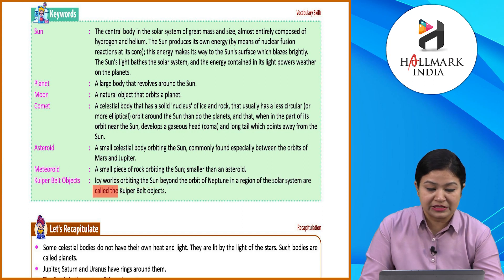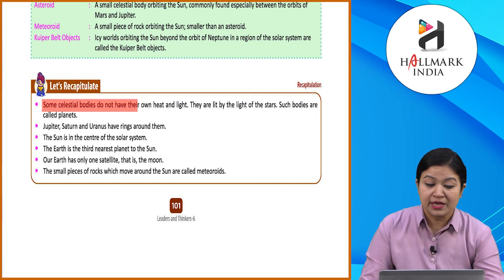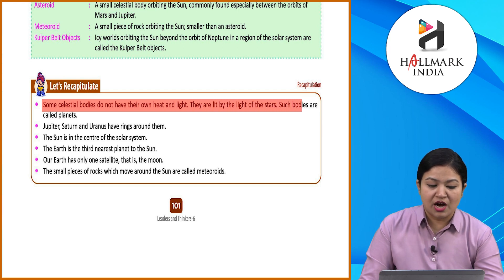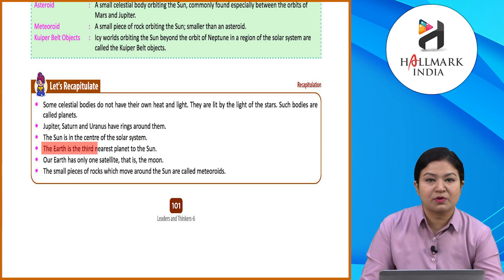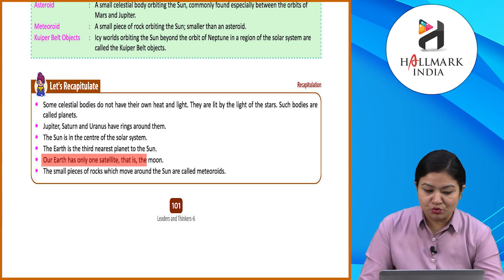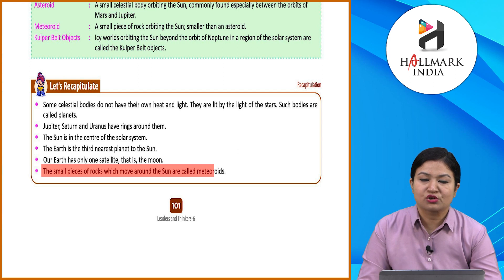Let's recapitulate: Some celestial bodies do not have their own heat and light — they are lit by the light of stars; such bodies are called planets. Jupiter, Saturn, and Uranus have rings around them. The Sun is at the center of the solar system. Earth is the third nearest planet to the Sun. Our Earth has only one satellite — the Moon. Small pieces of rock that move around the Sun are called meteorites. I hope you understood the chapter well — now you can revise and practice the given exercises.